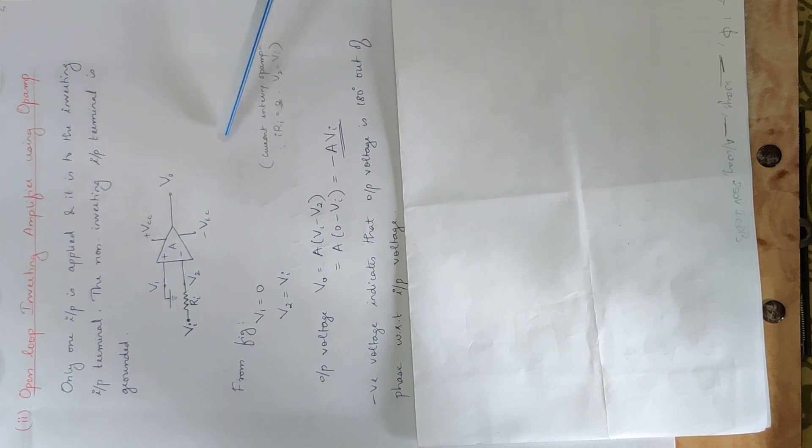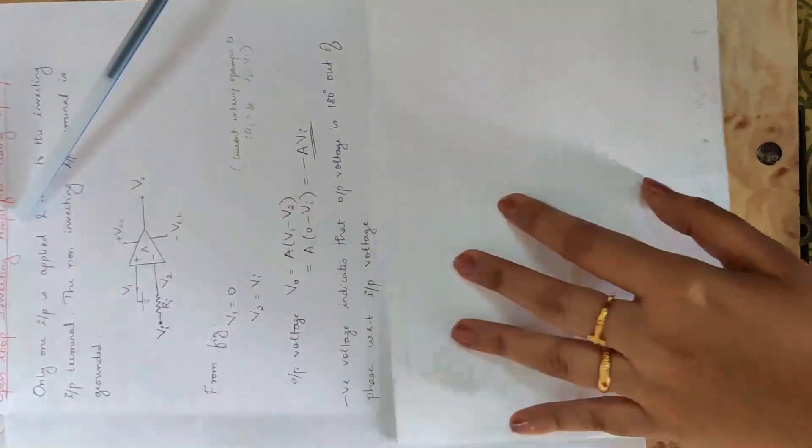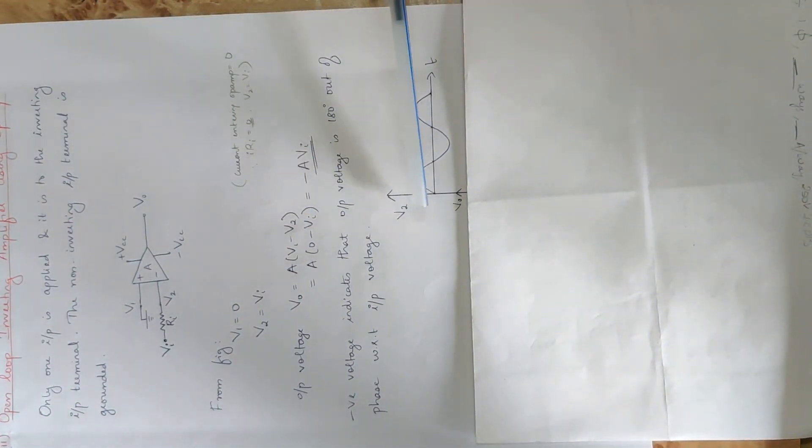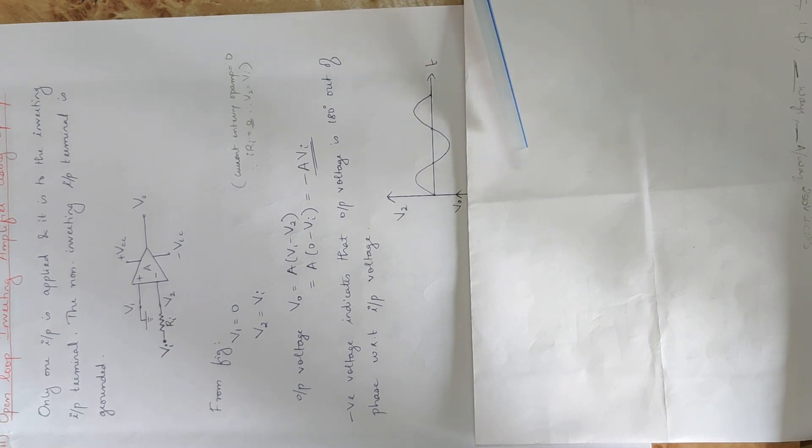The input voltage is a sinusoidal waveform applied at V2. The output voltage is Vo = -A·Vi. When V2 is positive (positive half cycle), the output voltage is negative. When V2 is negative (negative half cycle), the output voltage is positive. The output is the inverted version of the input.